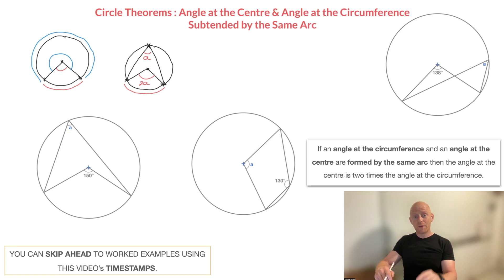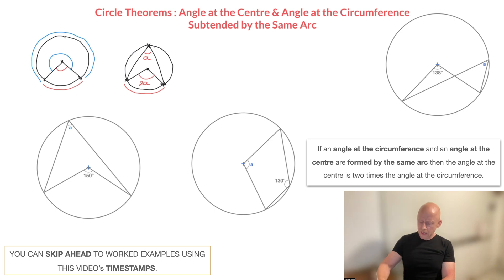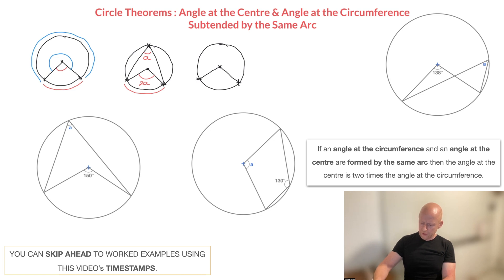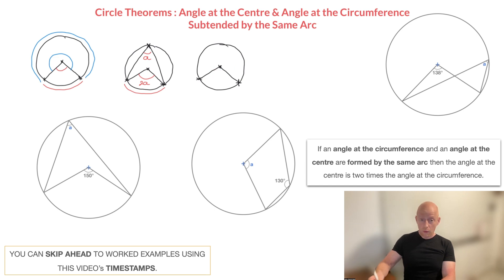Let me show you two other configurations for this same theorem. The second configuration looks something like this: I start by drawing the circle, add the center here, and place two points on the circumference — one there and one there. I create my two angles at the center by joining the points at the circumference to the center. I've split the circumference into two arcs, one down here and one up here, and we have two angles at the center — this one here and this one here.